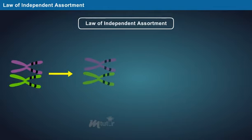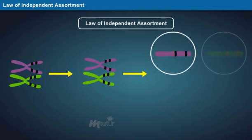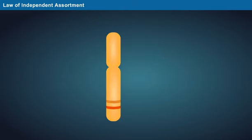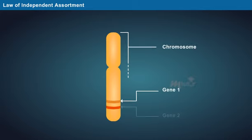However, the law of independent assortment has its own exceptions, when the genes are close or linked to each other on a chromosome.